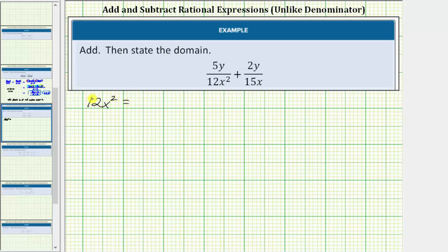The prime factorization of 12 is 2 times 2 times 3. So we'll write 12x squared as 2 times 2 times 3 times x times x. And then for 15x, because the prime factorization of 15 is 3 times 5, we'll write 15x as 3 times 5 times x.